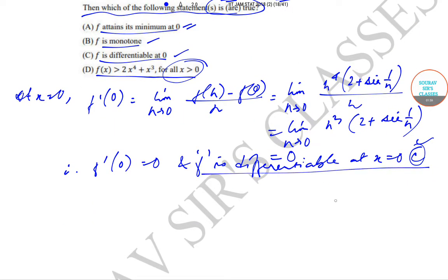Now it can be possible that since f dash 0 is 0, it can be either maximum or minimum at that point. We'll try to find out f double dash 0. When we find out f double dash 0, upon calculation f double dash 0 is equal to 0.